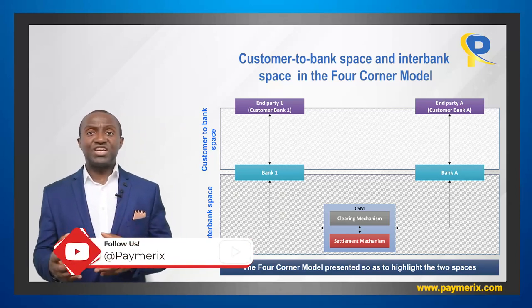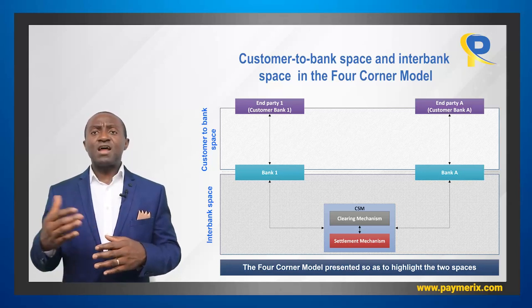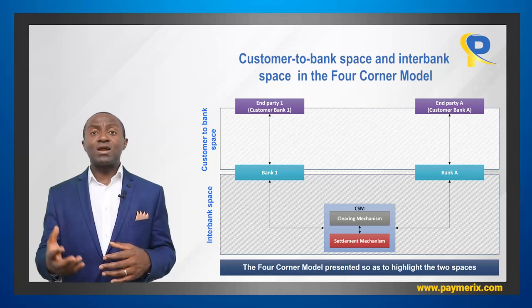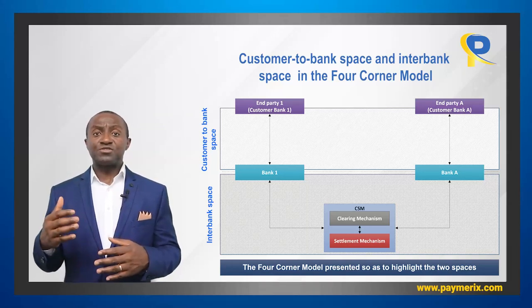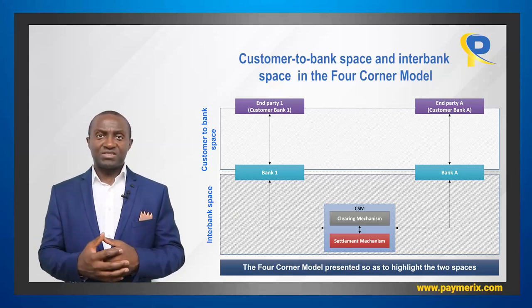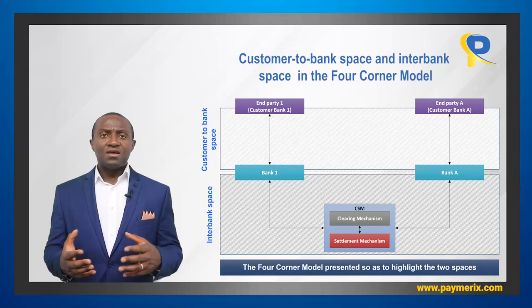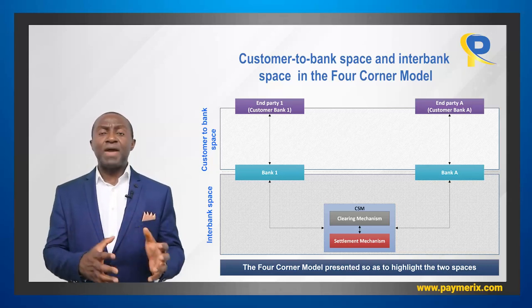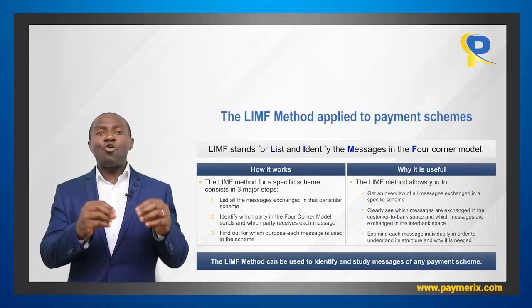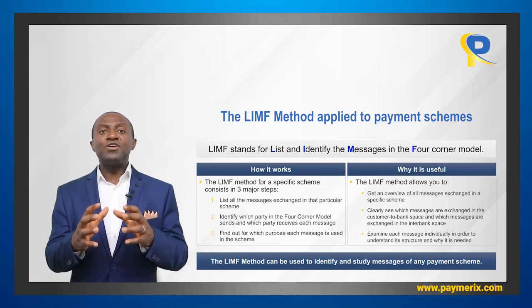The interbank space, as the name suggests, is the space where banks exchange payment information among themselves. Payment information can be exchanged either directly — such as between a bank and its sub-participants — or through clearing and settlement systems. When banks go through a clearing system, it must first receive the payment message, process it, and then forward it to the receiving bank. Clearing systems generally require banks to use particular message formats bearing additional information specific to those systems.